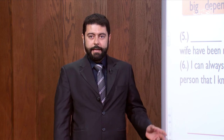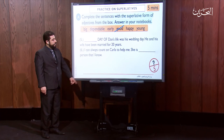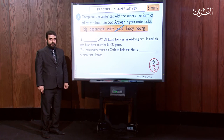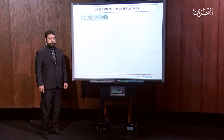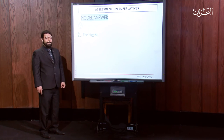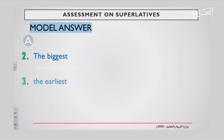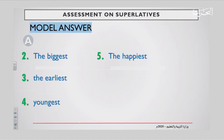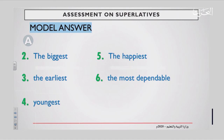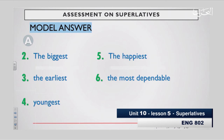All right, now let's take a look at the answers. Mark yourself out of five. The model answers: number two, the biggest. Number three, the earliest. Number four, youngest. Number five, the happiest. Number six, the most dependable. Pay attention to the capital letter in T, and all others should be in lowercase.